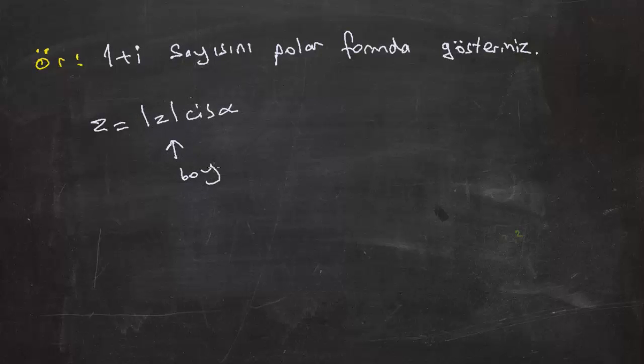Şimdi biraz örnek yapalım. Bu konu şundan dolayı önemli: polar gösterim, daha önce anlattığımız her şeyi aslında tek bir çatı altında birleştiriyor. Mesela bir artı i sayısının polar formda gösteriniz. Şimdi bunu aslında direkt şu şekilde yapabiliriz. Tabii ki z = |z| cis alfa diye yazılıyordu: |z| boy, alfa esas argüment. Ama kavramların iyi oturması için belki de bir kez karmaşık düzlemde bunu adım adım göstermekte yarar olduğunu düşünüyorum.